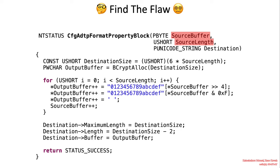The following snippet of CFG ADTB format property block is the vulnerable function. Pay attention to source buffer and source length, as they contain attacker-controlled input data.